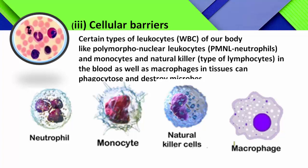If a pathogen enters into the blood and escapes the previous barriers, it is dealt with by the action of cellular barriers. Cellular barriers are represented by certain types of leukocytes — white blood corpuscles, also known as WBCs or leukocytes.